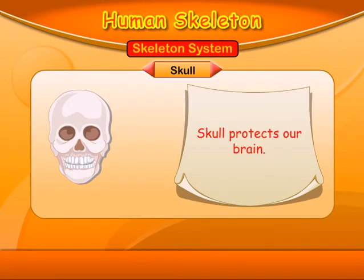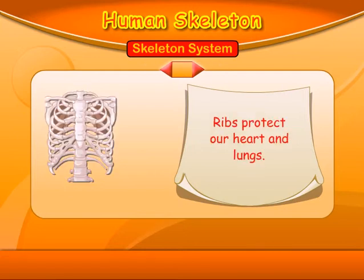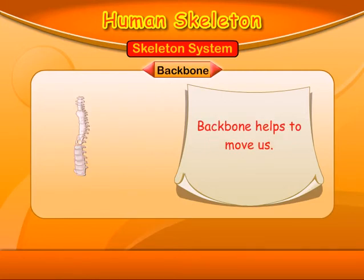Skull: the skull protects our brain. Ribs: ribs protect our heart and lungs. Backbone: the backbone helps us to move.